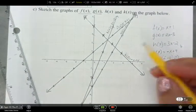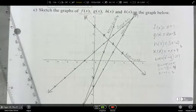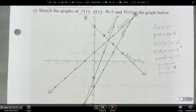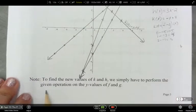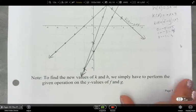So I'm going to write k of x equals negative x plus 4. How did you just write k of x? I could write just k of x. So just a reminder. So to find the new values for h and k, all you have to do is perform the operation on the y values of f and g.